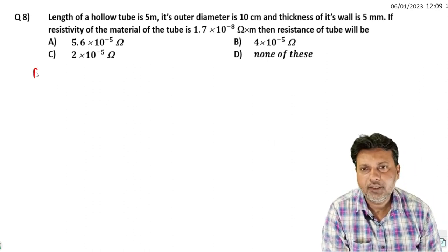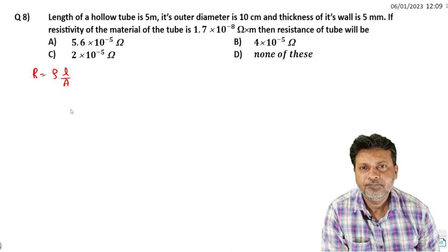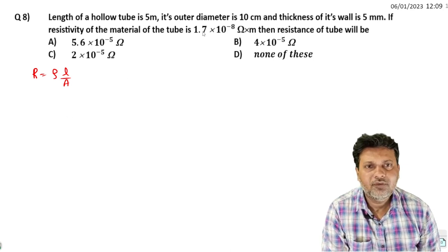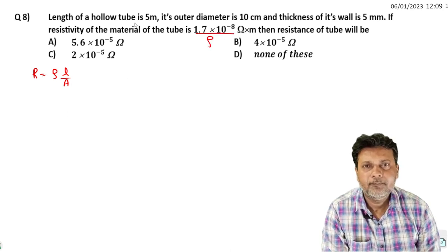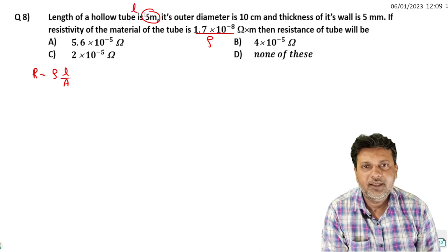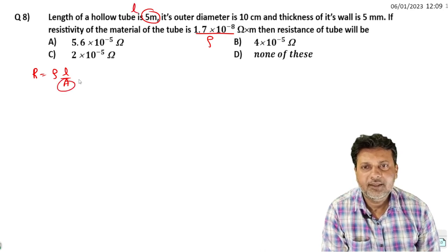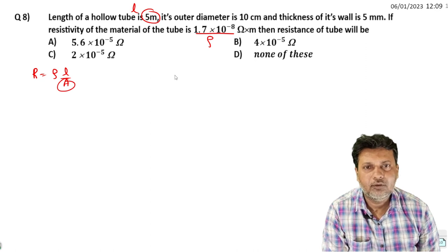For resistance, the formula is R equals rho L upon A. So we need the value of rho, we need the value of L, and we need the value of A.